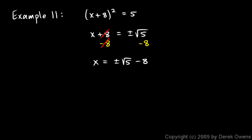Again it's typical to write the rational number first and then the radical, so I would write it as x is equal to negative 8 plus or minus the square root of 5. Just remember that that really represents two solutions: negative 8 plus the square root of 5 is one of them, and negative 8 minus the square root of 5 is the other.